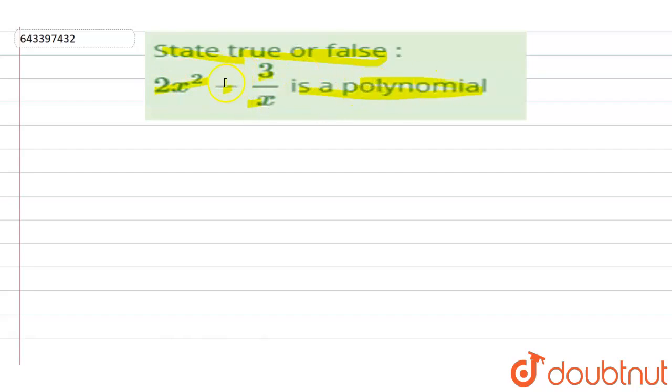So we have to tell whether this statement is true or false. The expression is given as 2x squared minus 3 upon x. This can be rewritten as 2x squared minus 3x power minus 1.